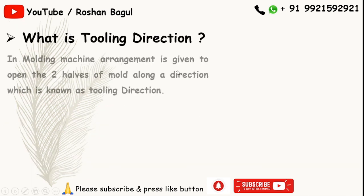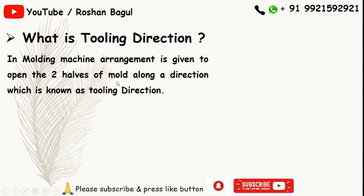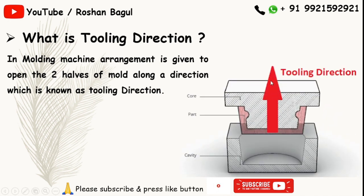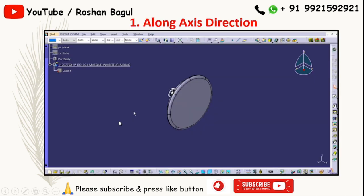So what is tooling direction? In a molding machine, a direction is given to open the two halves of the mold — this is known as the tooling direction. You can see here this red arrow shows the main tooling direction, and in that direction the core and cavity open and the part is ejected. We will see this in detail.